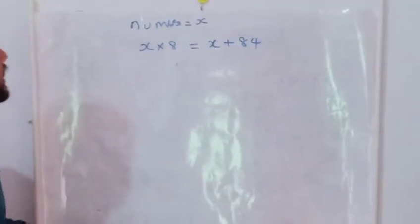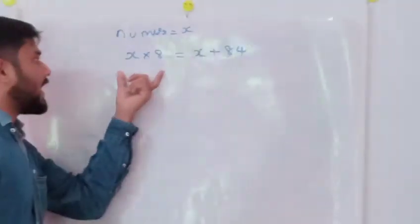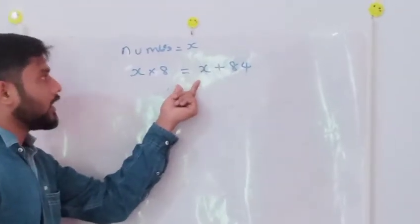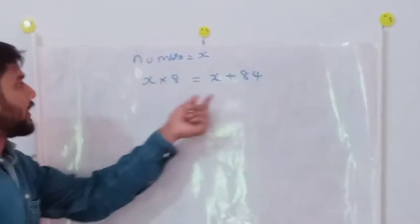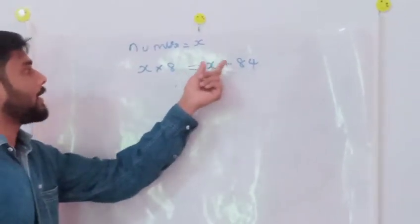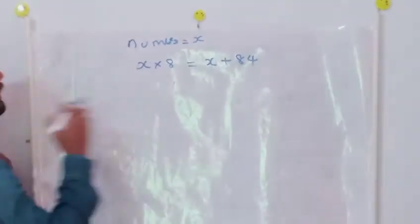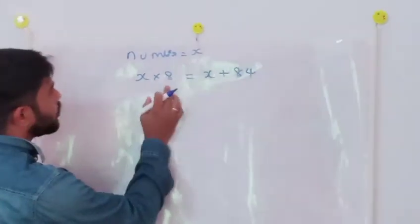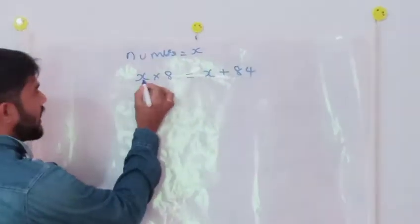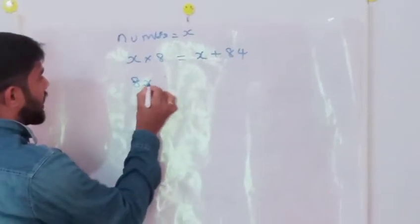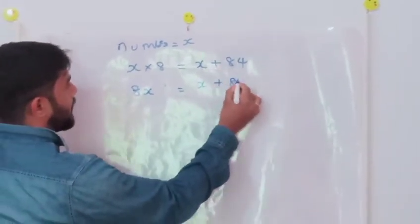I will explain the question again. One number is there. With that number, we will multiply 8. The result will be 84 increased by that number — that means that number plus 84. So, the number into 8 is equal to that number plus 84. So 8x equals x plus 84.